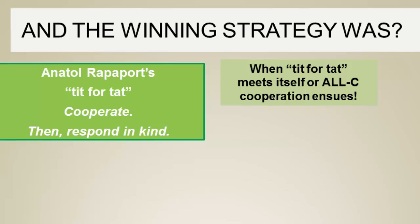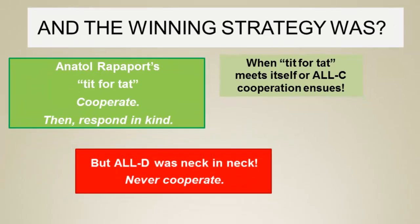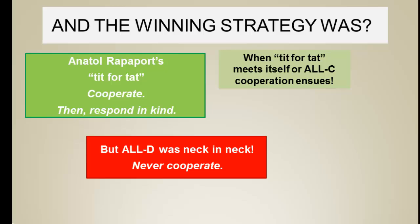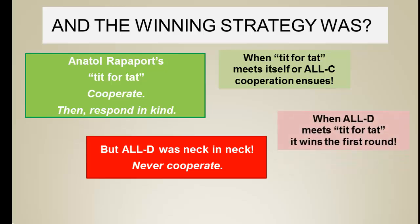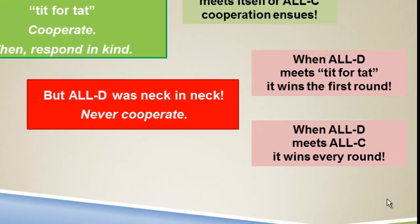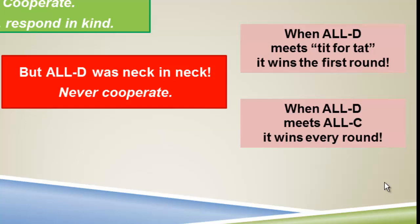It's often overlooked that Always Defect was a very close runner-up to Tit for Tat — in fact, six strategies were nearly neck and neck. When Always Defect encounters Tit for Tat, it wins the first round, and then both continue to defect on each other for the rest of their encounters. But when Always Defect meets Always Cooperate, it wins every round. So Always Defect was actually much more effective than it's often given credit for.